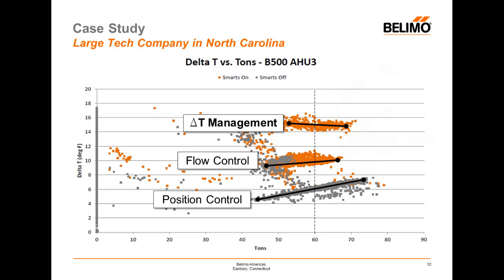In position control, in order to serve 60 tons of cooling at 6 degrees F, 240 gallons a minute were required. In flow control, to serve the same 60 tons near 10 degrees Fahrenheit required almost 100 gallons a minute less water than position control. And with Delta-T manager engaged, the same 60 tons only requires 96 gallons a minute. So the difference between a standard control valve and a valve with Delta-T management reduced flow from 240 gallons a minute down to 96 — that's 40% of the original flow rate to serve the same amount of load.